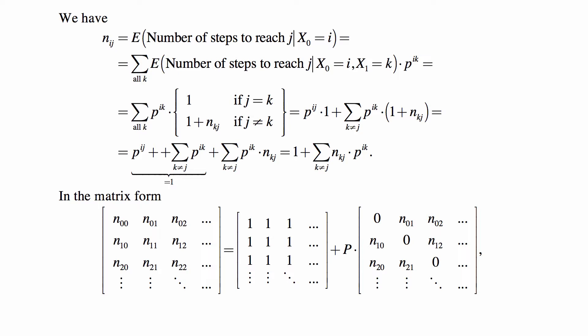Then the first terms, all together, are all probabilities of the form pi and then something. Well, those add up to one. And the second term is summation over k not equal to j of Nkj times pik. And this is true for any ij.